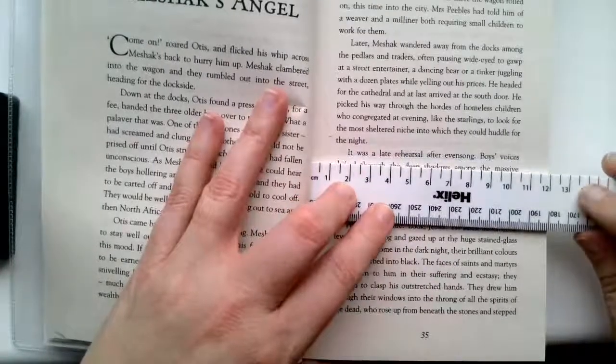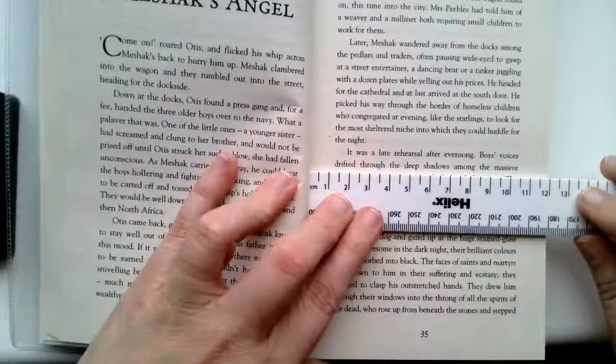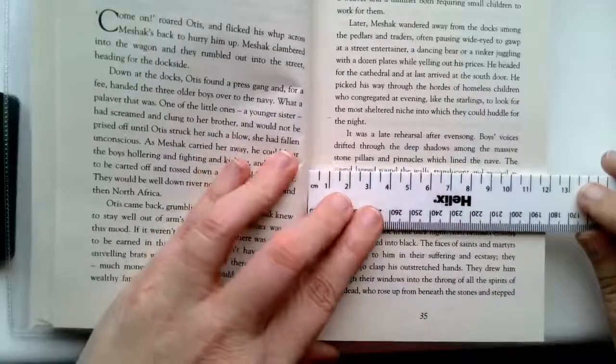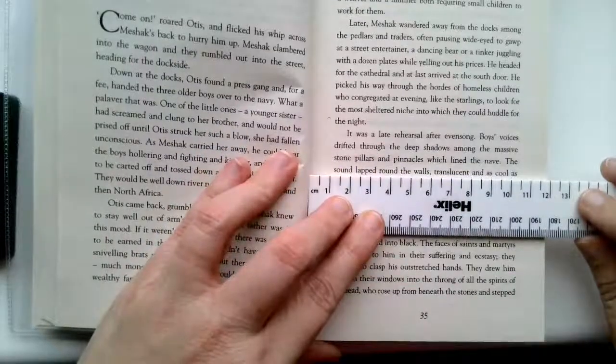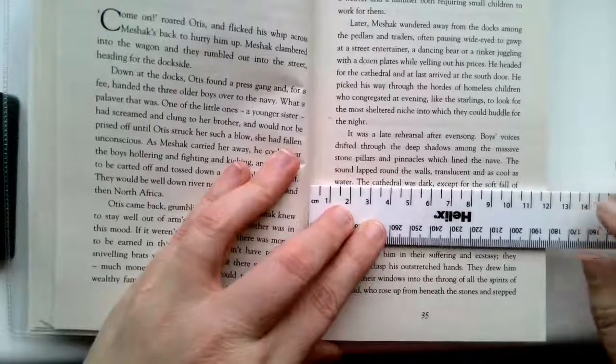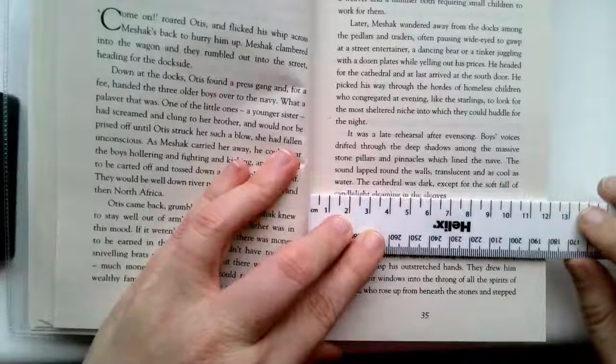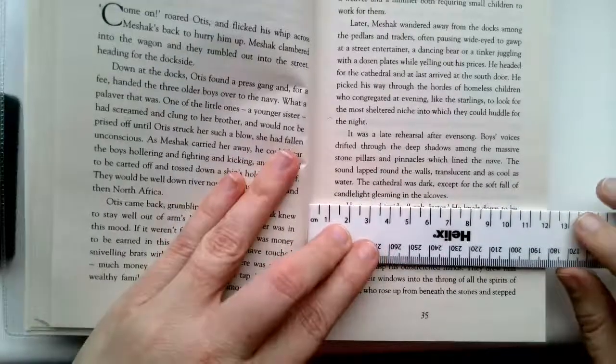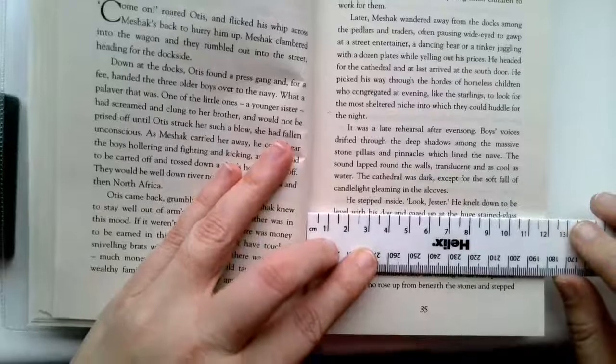It was a late rehearsal after Evensong. Boys' voices drifted through the deep shadows among the massive stone pillars and pinnacles which lined the nave. The sound lapped round the walls, translucent and as cool as water. The cathedral was dark, except for the soft fall of candlelight gleaming in the alcoves.